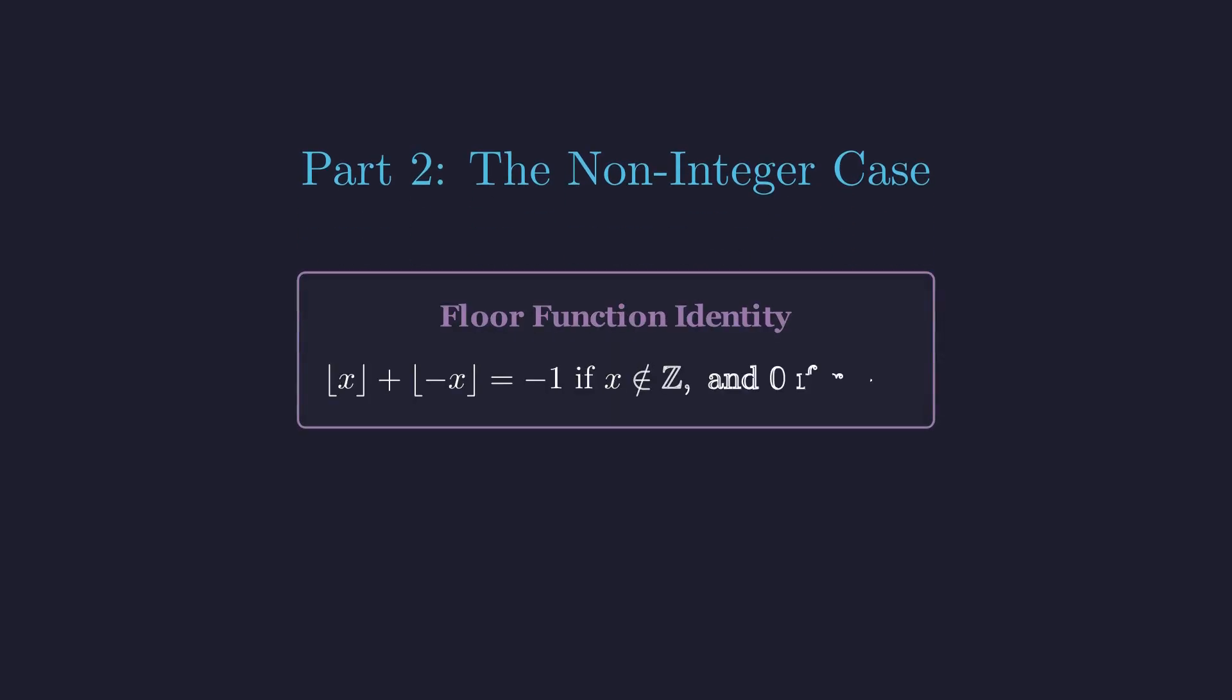The key is this identity. If x is an integer, the floor of x and the floor of negative x are opposites, summing to 0. But if x is not an integer, say i plus a fractional part f, then the floor of negative x becomes negative i minus 1, and the two floors sum to negative 1.